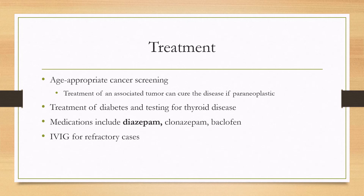For treatment, we start by finding out if there is a neoplasm, so age-appropriate cancer screening is done. Treatment of the associated tumor can potentially cure the disease in paraneoplastic cases. We also want to treat any related autoimmune diseases such as diabetes or thyroid disease. Medications for symptomatic management include diazepam or clonazepam and baclofen, and for refractory cases IV immunoglobulin can be used.